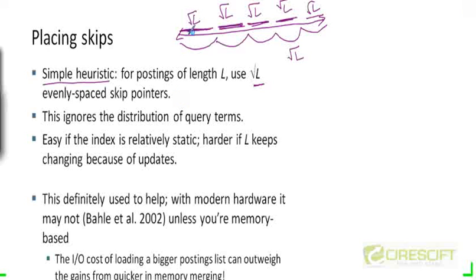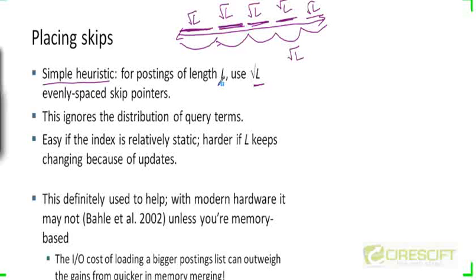It's important that the index remains static, because if you start deleting or inserting elements from the postings list, the lengths of the spans will change. Sometimes you may end up deleting the element that is the source of a skip pointer. So for this whole structure to work, it's best if the index is static.